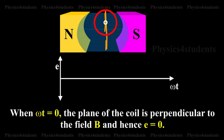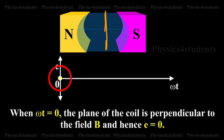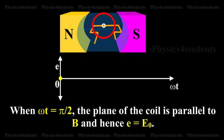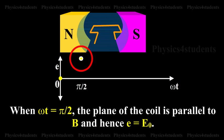When ωt = 0, the plane of the coil is perpendicular to the field B and hence E = 0. When ωt = π/2, the plane of the coil is parallel to B and hence E = E₀.